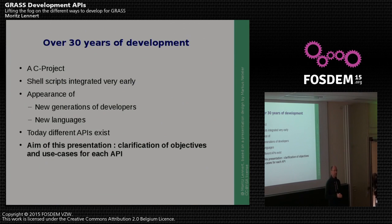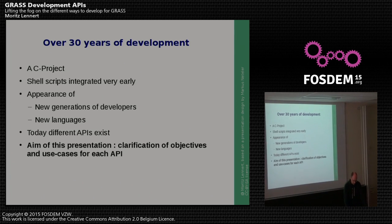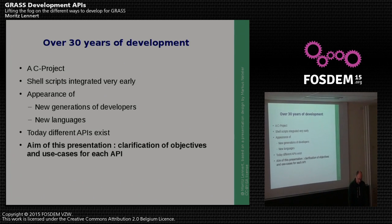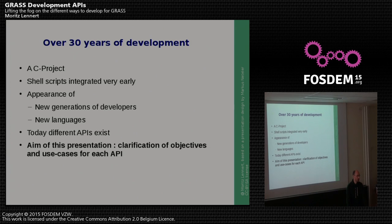GRASS is basically a C project, written in C. As Marcus said, it's over 30 years of development, and it's quite interesting that a lot of the basic C functions that were developed over 30 years ago are actually still there, are still working, so it's a quite stable source base.